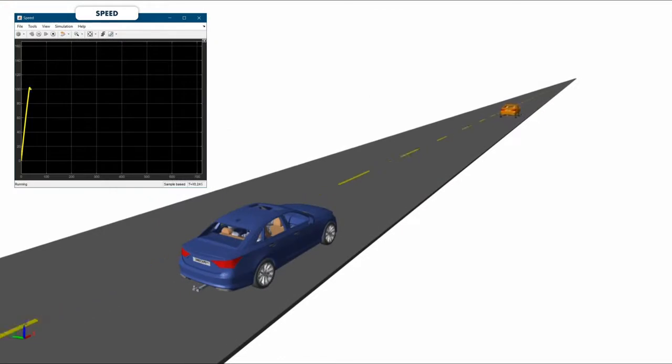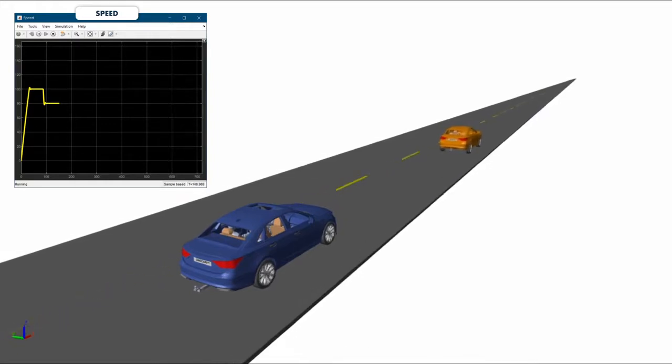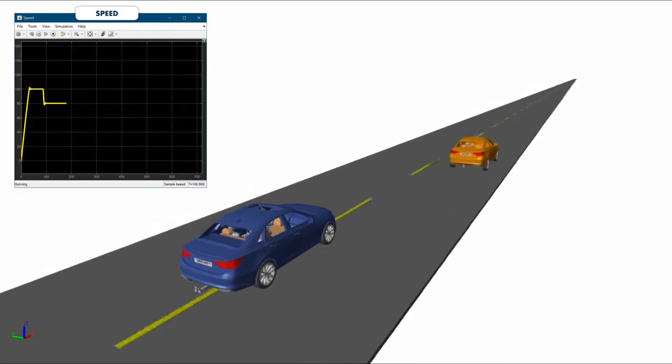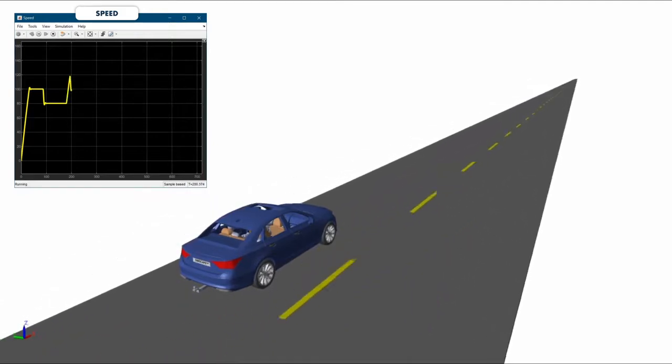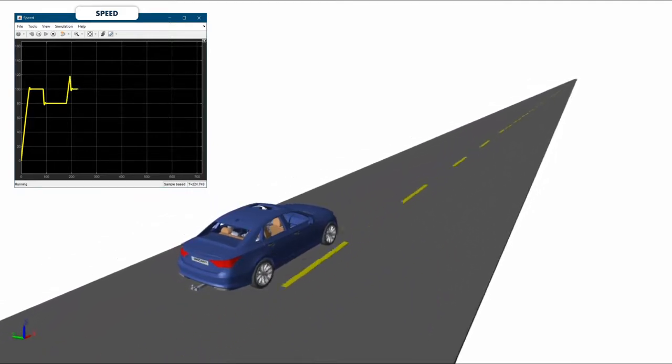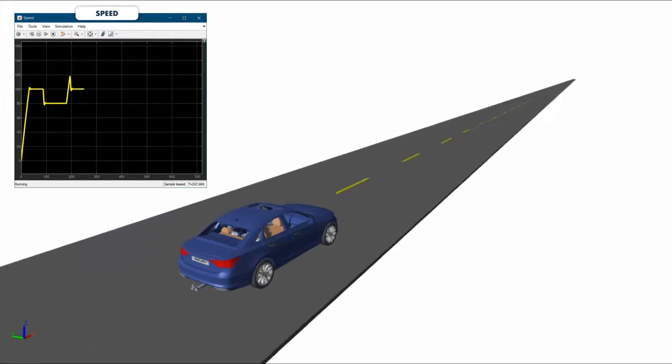This animation was produced by Simscape Multibody. The vehicle is traveling on a highway at cruising speed when it ends up behind a slower vehicle. The driver accelerates to pass the car, then returns to the original lane. During the passing maneuver acceleration, the motor provides 200 Nm of torque.